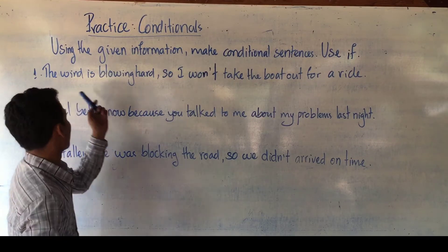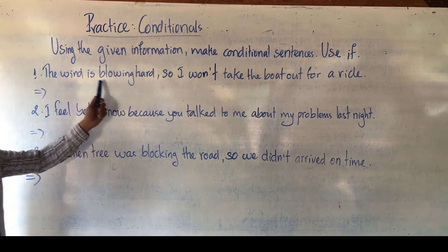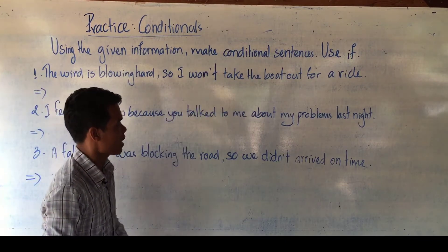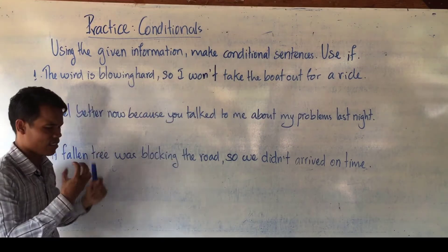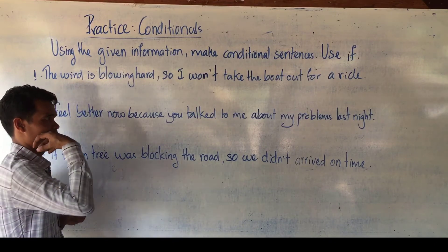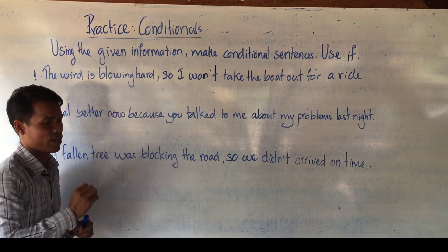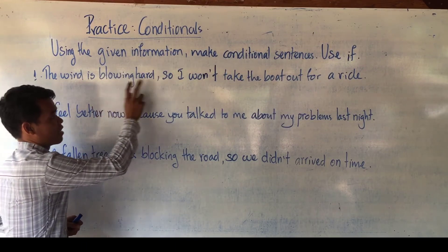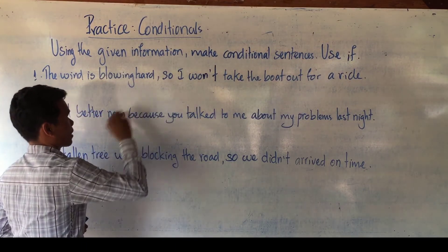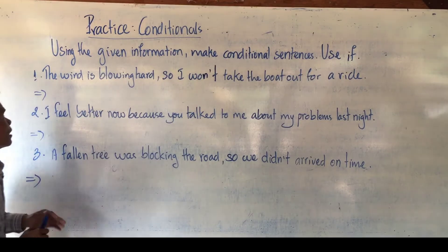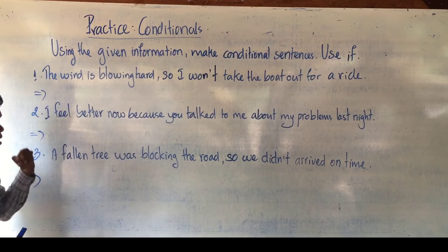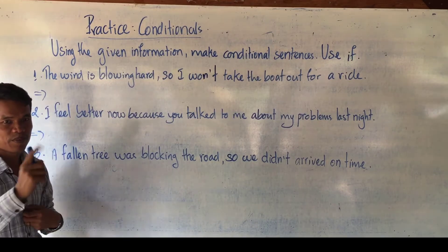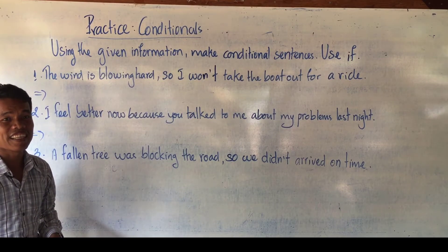Number one: 'The wind is blowing hard so I won't take the boat out for a ride.' Because the action is happening now, that's why I cannot take the boat out for a ride. What condition is it? It is in the present, and we can write something which is contrary to fact — so it is second conditional.